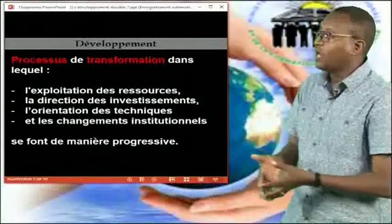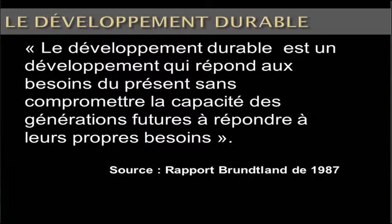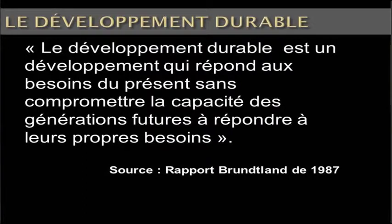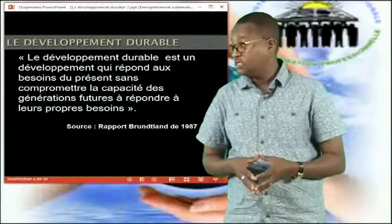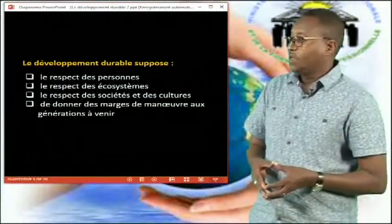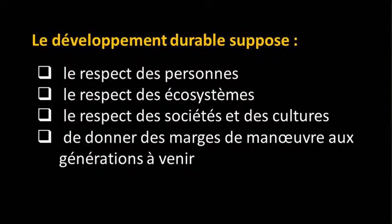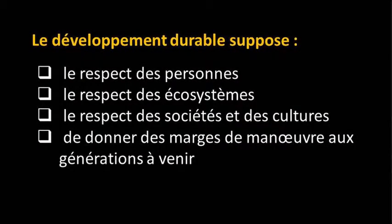Qu'est-ce que le développement durable ? Le développement durable est un développement qui répond aux besoins du présent, sans compromettre la capacité des générations futures à répondre à leurs propres besoins. Cette définition a été donnée dans le rapport Brundtland de 1987. Le développement durable suppose le respect des personnes, en premier lieu, et par la suite le respect des écosystèmes.